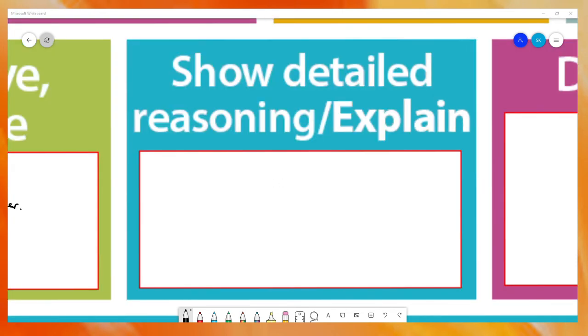This next pair is linked to the previous box: show detailed reasoning or explain, or it might say find with detailed reasoning and then you do an answer. This is still work it out, but you need to ensure that your method is detailed and complete. You need to justify answers that work or don't.